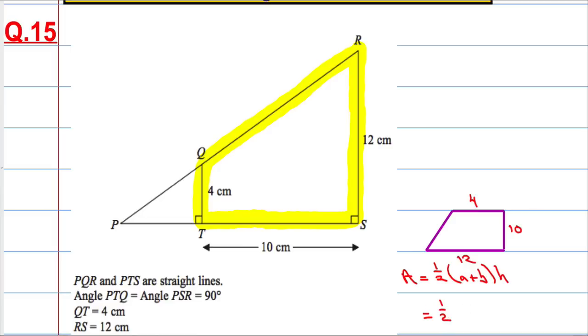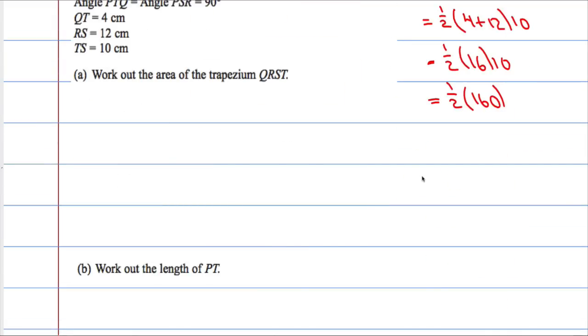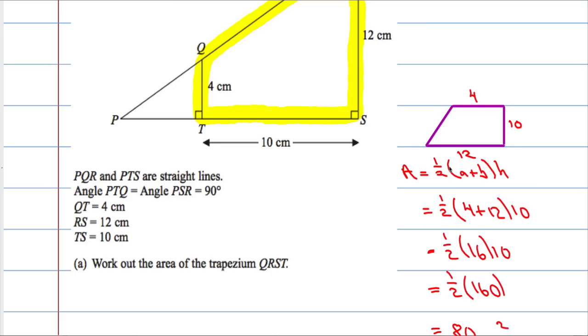So we get a half times, the two parallel sides are 4 and 12, and we're going to multiply that by 10. So that's a half times 16 times 10, which is half of 160, which is 80. Let's just check the units, centimeters, so it must be centimeters squared.